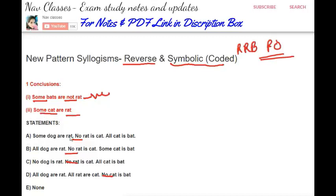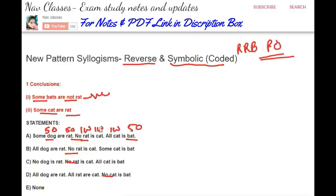The first conclusion asks: 'some bats are not rat.' We need to make a relation between bats and rats. There is 'some dogs are rat' and 'rat and cat.' As per the 150 rule, we need to merge cat and cat — both having 100 each, total 200, so yes, we can merge them. Can bat give 50 out of 50? Yes. Can rat give 100 out of 50? Yes. So this conclusion is satisfied.